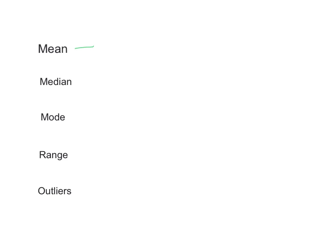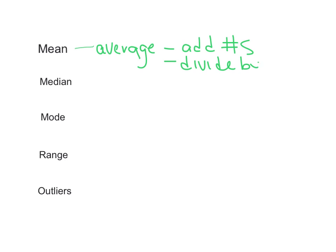So the mean is like the average. To find the average of a number, you basically add all the numbers and then divide by the number of numbers.